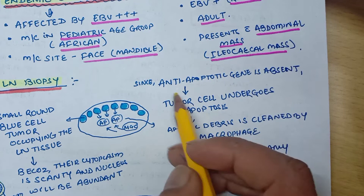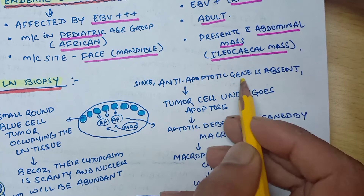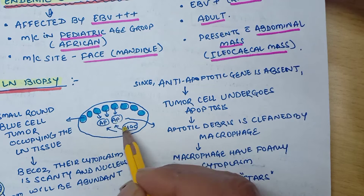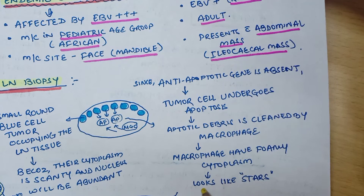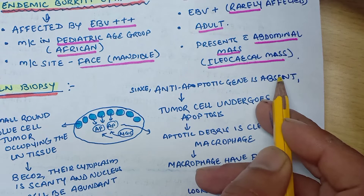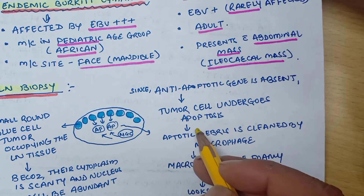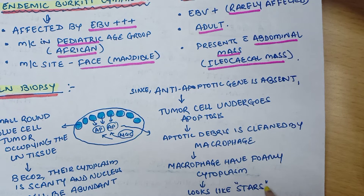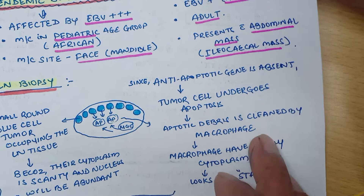In Burkitt's lymphoma, the anti-apoptotic gene is absent, so tumor cells undergo apoptosis. The apoptotic debris is cleared by macrophages, which have a foamy cytoplasm that looks like stars. Overall, this gives the characteristic starry sky appearance seen in Burkitt's lymphoma.